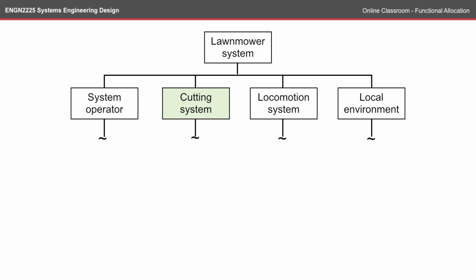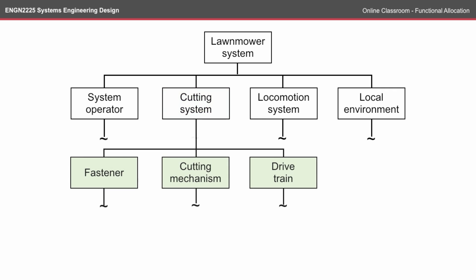If we look at the cutting system, it's a bit more complicated. There might be three subsystems or units that make up the system. When thinking about how these are separated, we should look for a minimal amount of interaction between the blocks, so that they're as independent as possible. This will allow for good modularity.